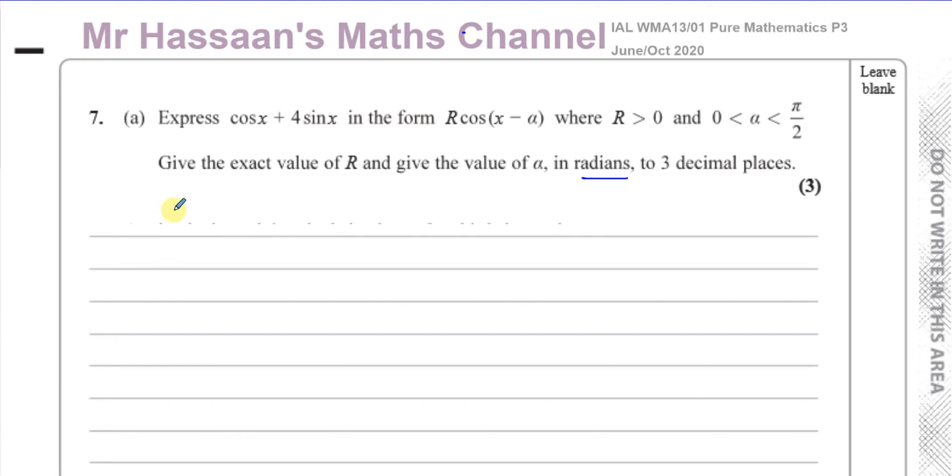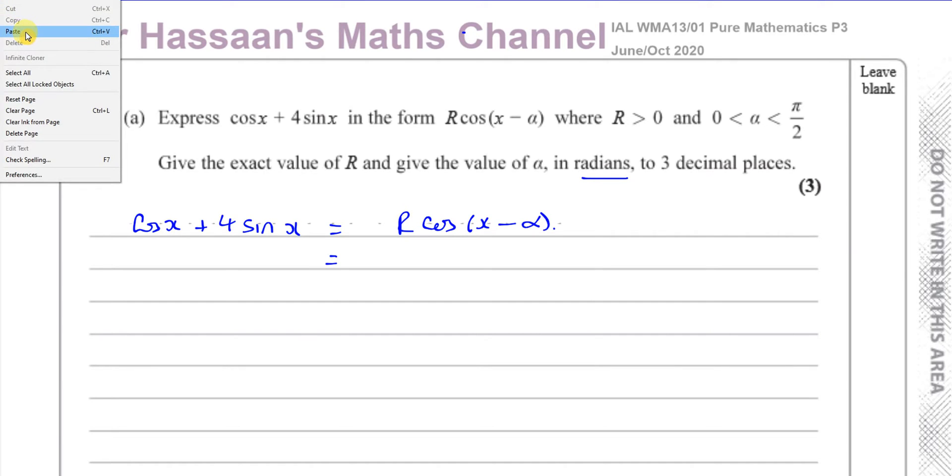First of all, we want to express cosine of x plus 4 sine of x in the form r cosine x minus alpha. What we need to do here is split this up into separate angles using the addition formula, which are found in your formula book. The cosine of a minus b, which is the one we're looking for, is cosine x cosine alpha plus sine x sine alpha. So we have r times cosine x cosine alpha plus r times sine x sine alpha.